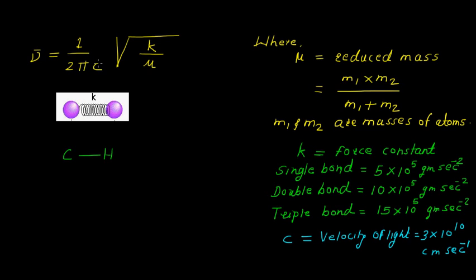C is the velocity of light and its value is 3×10^10 centimeter per second. By putting all these values in this formula we can calculate the vibrational frequency of any bond.